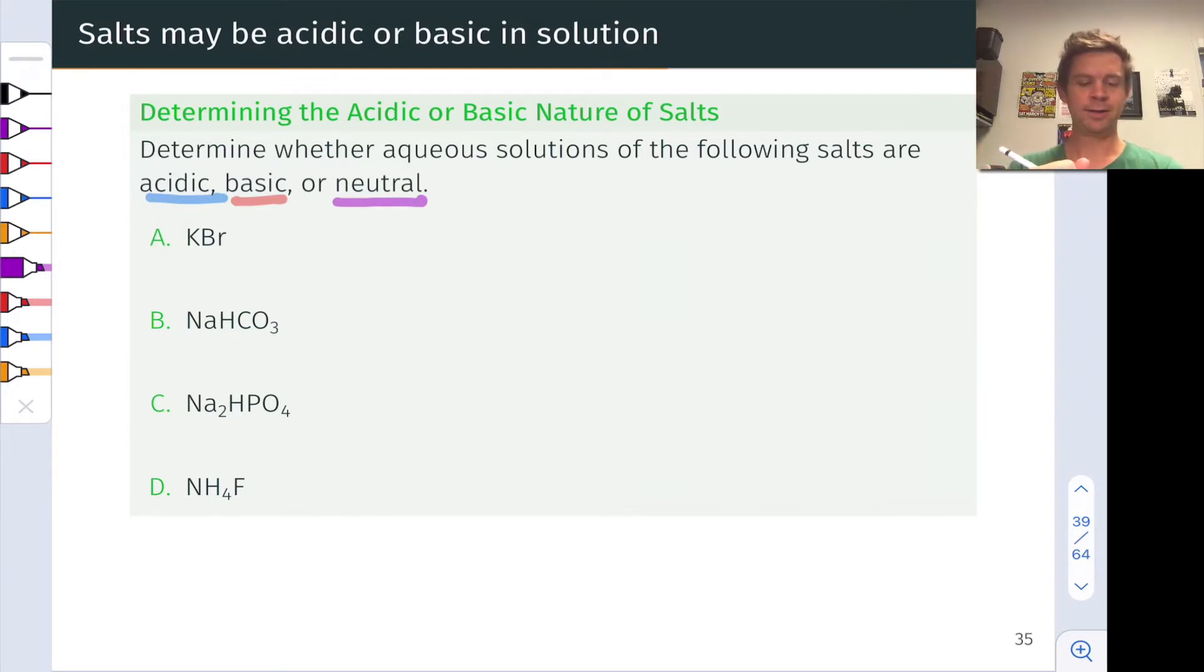For example KBr, the very first thing we should do is split this into its component ions, K plus and Br minus. K plus is the conjugate acid of KOH. Let's actually write out the conjugate base here.